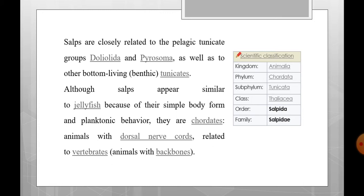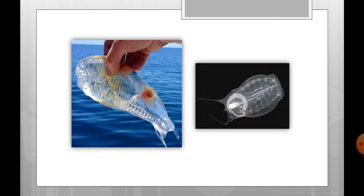SALPA animals have a dorsal nerve cord related to vertebrates. As you can see, the transparent body of the salpa is like a jellyfish but the structure is barrel-shaped.